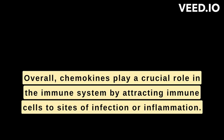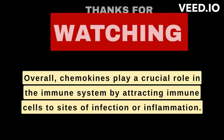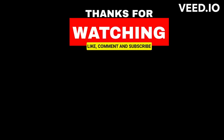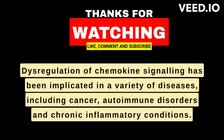Overall, chemokines play a crucial role in the immune system by attracting immune cells to sites of infection or inflammation. Dysregulation of chemokine signaling has been implicated in a variety of diseases, including cancer, autoimmune disorders, and chronic inflammatory conditions.